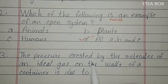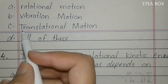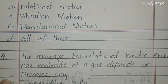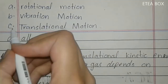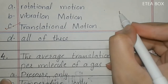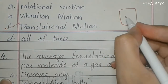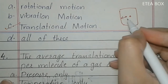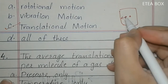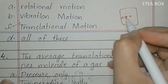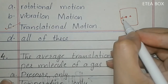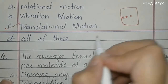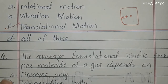Third MCQ: the pressure exerted by the molecules of an ideal gas on the wall of a container is due to translational motion. When a molecule collides with the wall of the container, it exerts pressure. This pressure is because of the translational motion of the molecules. So here option C is correct.